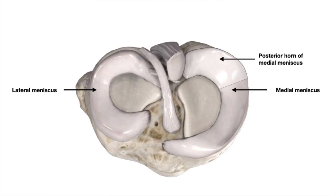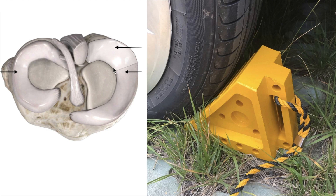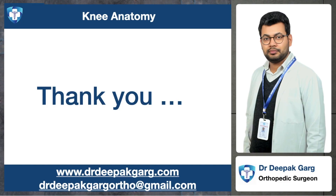The last component of the posteromedial corner of the knee is the posterior horn of the medial meniscus. It has attachments to all four other structures of the posteromedial corner: the oblique popliteal ligament, the semimembranosus tendon, the posteromedial joint capsule, and the posterior oblique ligament. It plays a very important role in stabilization of the posteromedial corner, acting as a chock block during flexion-extension movement of the femur. This was about the anatomy of the posteromedial corner of the knee. Thank you.